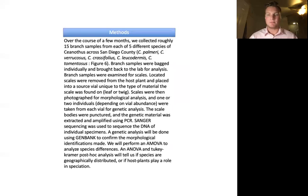Sanger sequencing will be used to sequence the DNA of the specimens and we will conduct a genetic identification that will support our morphological identification. Once we map the distribution of discovered species, we'll be able to perform statistical analyses like an ANOVA and a Tukey-Kramer post-hoc analysis to investigate whether geography or host plants play a role in scale speciation.